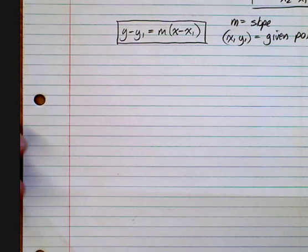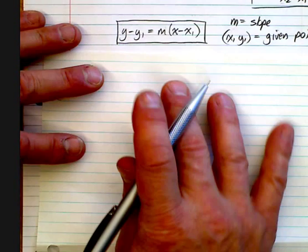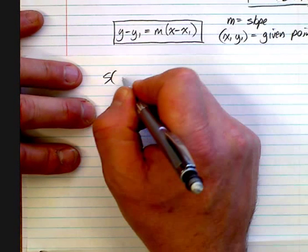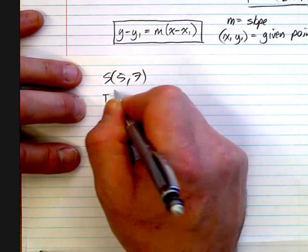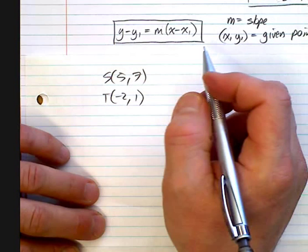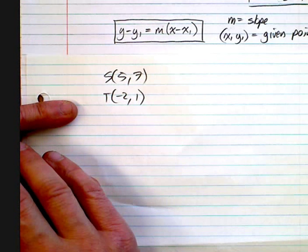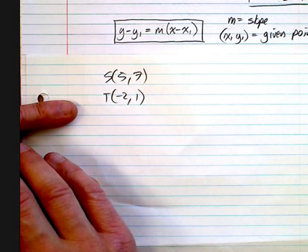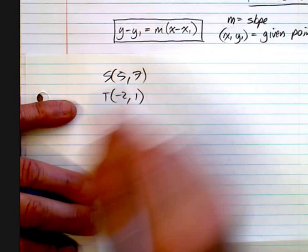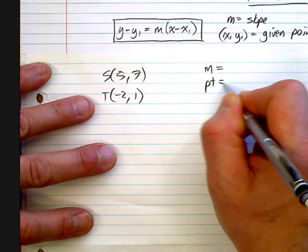Now, what would be a question — say, a line passes through two points: S, which is 5 and 7, and T, which is negative 2 and 1. Find the equation of the line that passes through these two points. Well, there are two things you need to find the equation: a slope and a point.